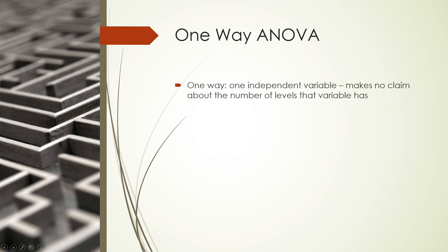A one-way ANOVA is used when you have one independent variable — that's what the one-way tells you. If you had a two-way design, then you would have two independent variables. In a one-way design, we have one independent variable, but this actually makes no claim about the number of levels that variable has. It could have two levels, it could have 500 levels.